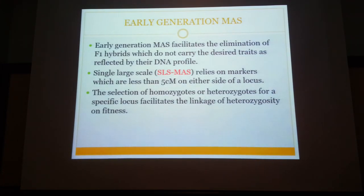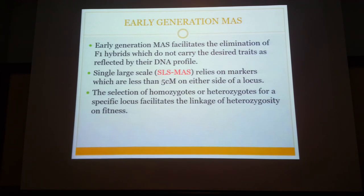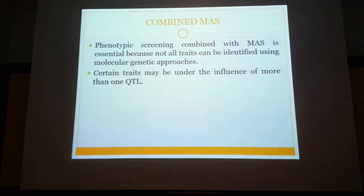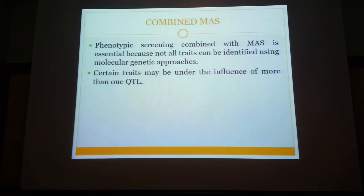There are some other variants of MAS. For example, early generation MAS, where you screen for plants whose genotype may not yet be known. You screen using random primers, isolate loci, and then link them to specific traits. You also have combined MAS, in which you combine traits which are phenotypically visible with the genotype.